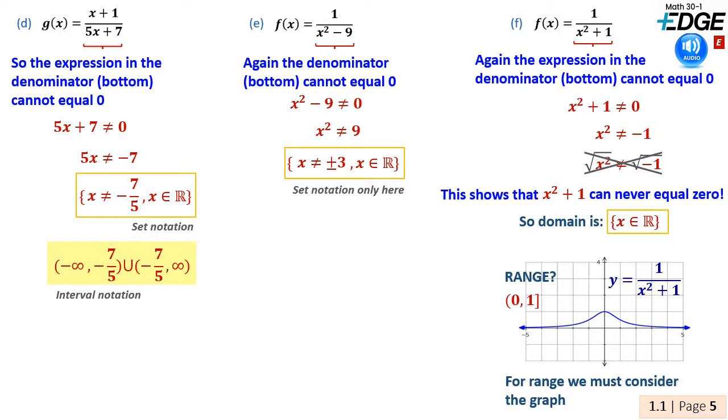This means that the domain of the graph will be all real numbers, which we can equally write in interval notation as from negative infinity to positive infinity.